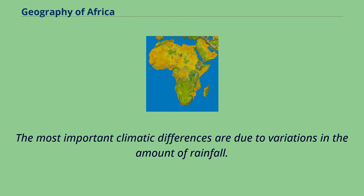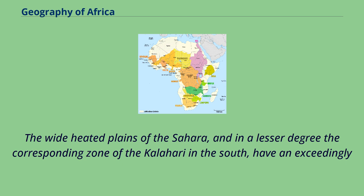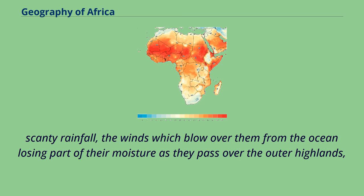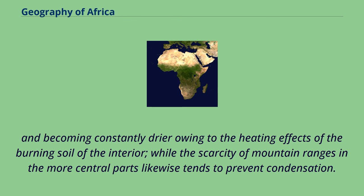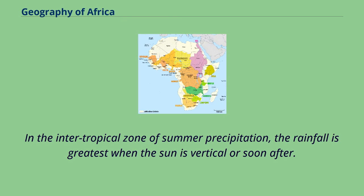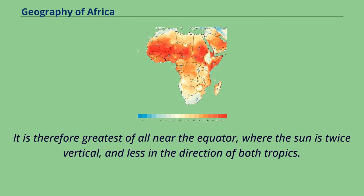The most important climatic differences are due to variations in the amount of rainfall. The wide heated plains of the Sahara, and in a lesser degree the corresponding zone of the Kalahari in the south, have an exceedingly scanty rainfall, the winds which blow over them from the ocean losing part of their moisture as they pass over the outer highlands, and becoming constantly drier owing to the heating effects of the burning soil of the interior, while the scarcity of mountain ranges in the more central parts likewise tends to prevent condensation. In the inner tropical zone of summer precipitation, the rainfall is greatest when the sun is vertical or soon after, and therefore greatest near the equator, where the sun is twice vertical, and less in the direction of both tropics.